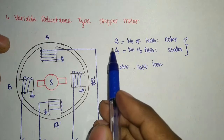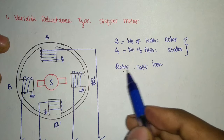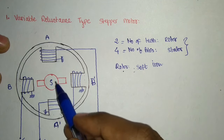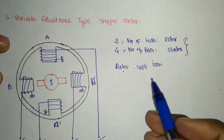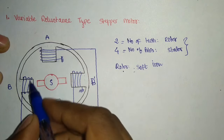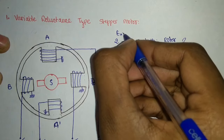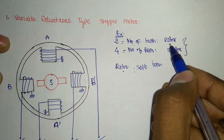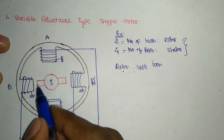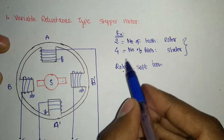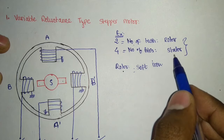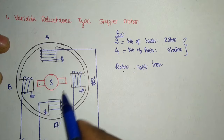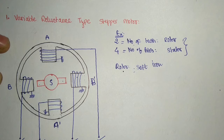To better understand the concept, let's start with the variable reluctance type stepper motor. In this type, the rotor is made of soft iron — it is not a permanent magnet, just a conducting material. The stator has the windings. In our example, we are having two teeth on the rotor and we will be having some number of poles on the stator — in this case, four poles on the stator.